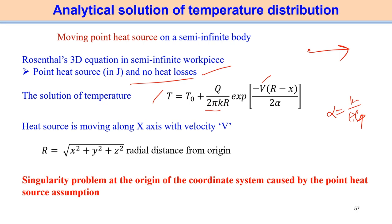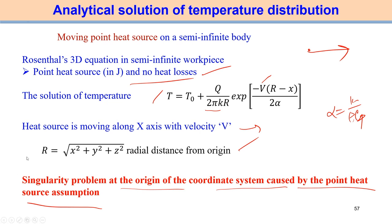In this solution, we cannot estimate the temperature at the point of heat source application because of a singularity problem at the origin of the coordinate system caused by the point heat source assumption. At the origin, the temperature distribution equation cannot give a solution — this is called the singularity problem associated with the solution.